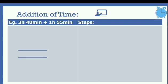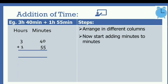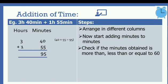Let's see another example: 3 hours 40 minutes plus 1 hour 55 minutes. First step is to arrange in different columns of hours and minutes. Then start adding minutes to minutes. We added 40 and 55 and got 95. Now we check if the minutes obtained is more than, less than, or equal to 60. We check this because 1 hour is equal to 60 minutes. Here, 95 is greater than 60.